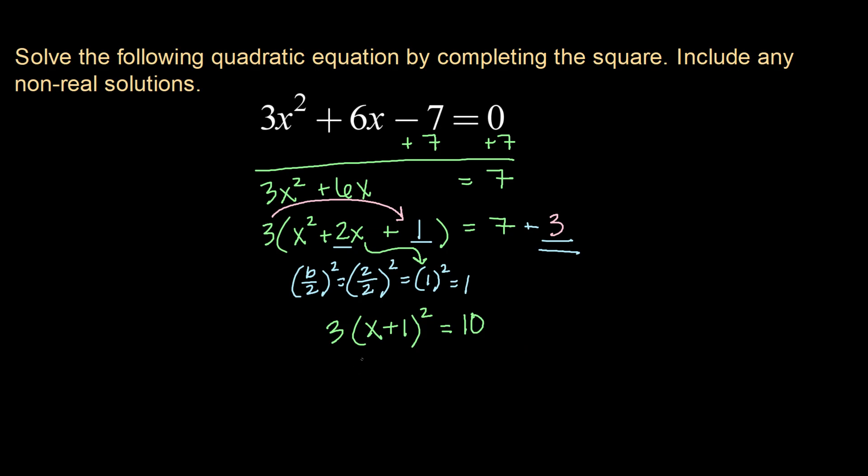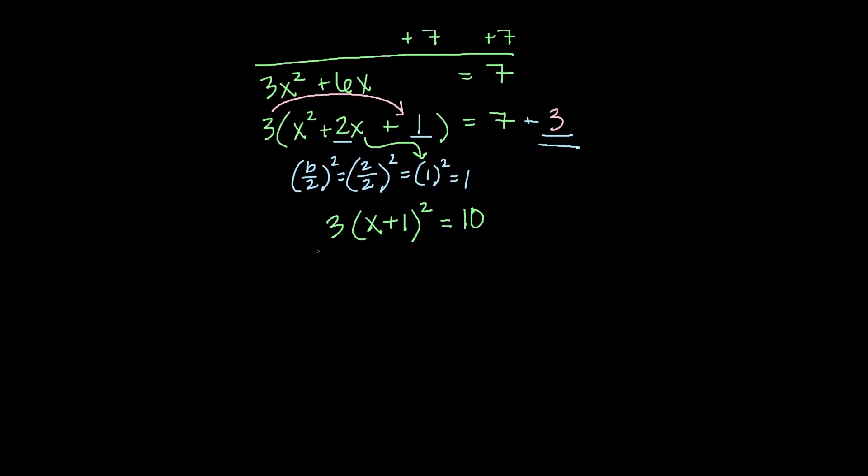So now we're going to solve for x here by isolating x. The first thing that we're going to do is get rid of that 3. So divide both sides by 3. So we have x plus 1 squared equals 10 over 3.